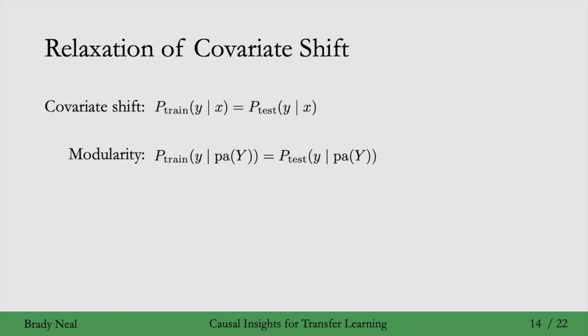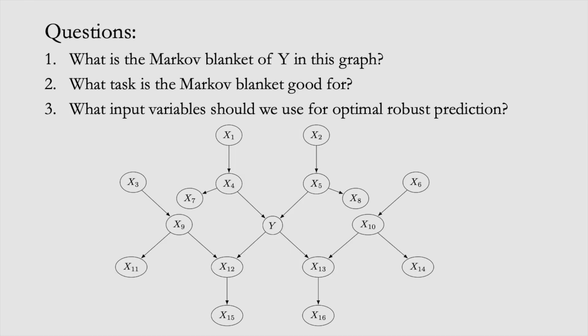And that brings us to the end of the section on transfer learning and to these three questions, all about this graph. The first question is: what is the Markov blanket of y in this graph? Then: what task is the Markov blanket good for? And finally: what input variables should be used for optimal robust prediction?